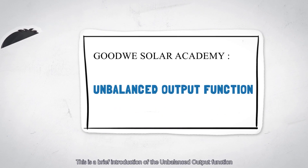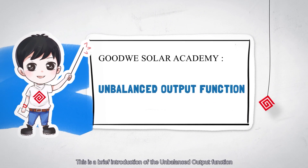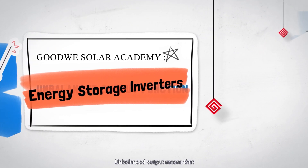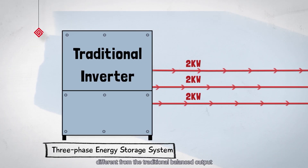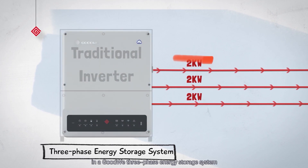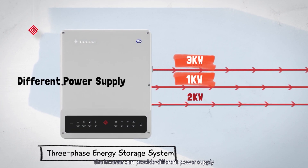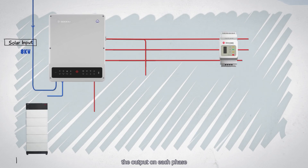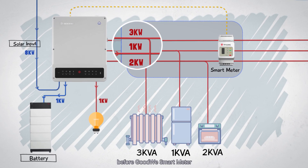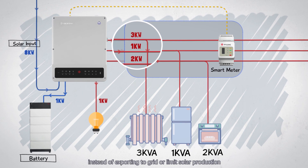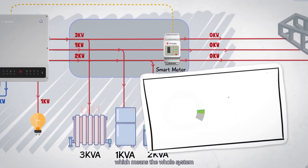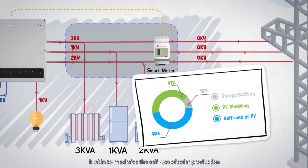This is a brief introduction of the unbalanced output function of Goodwe energy storage inverters. Unbalanced output means that, different from traditional balanced output, in a Goodwe three-phase energy storage system the inverter can provide different power supply on three phases at the same time. Each phase can share power with other phases via the Goodwe smart meter, instead of exporting to the grid or limiting solar production, maximizing the self-use of solar production.